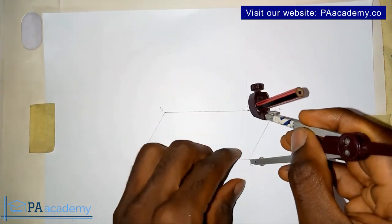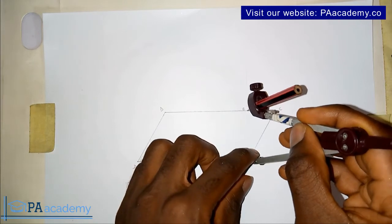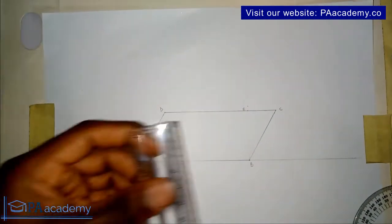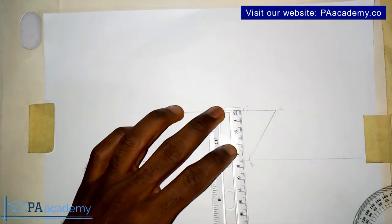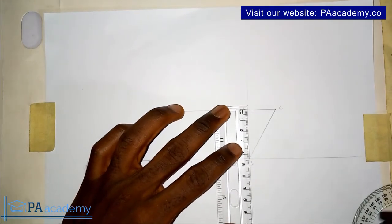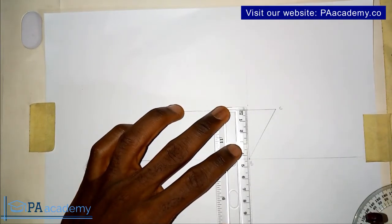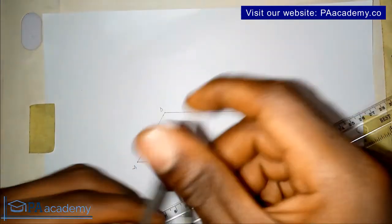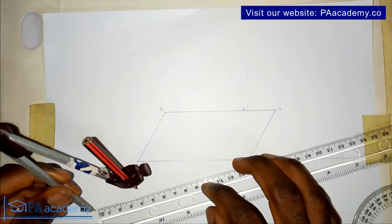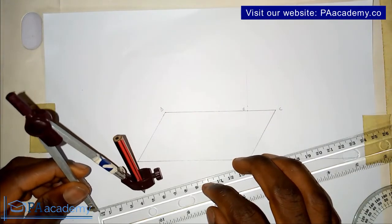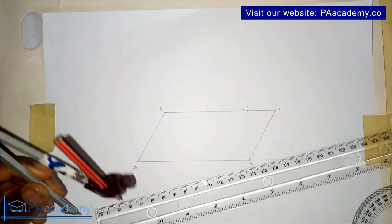Now use the compass with the length of BE. You can place your compass directly on it to get the length, or you can use your ruler to measure it and then bring your compass to measure it on your ruler — whichever way is convenient for you.